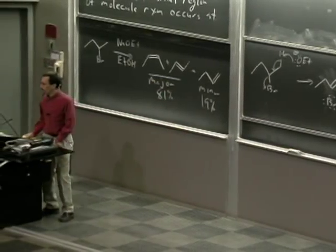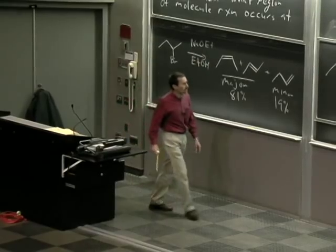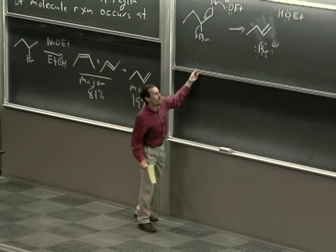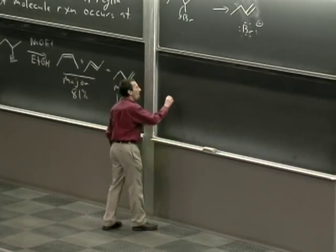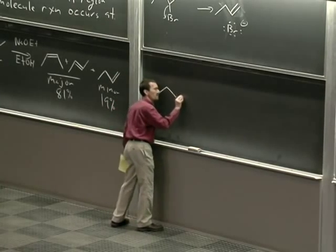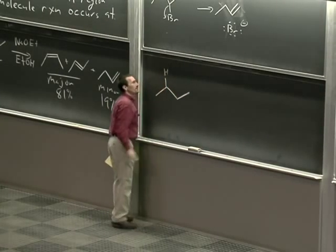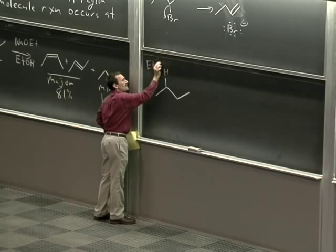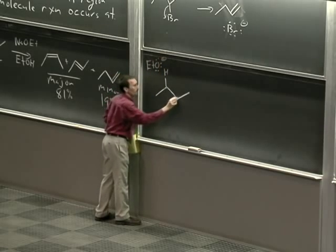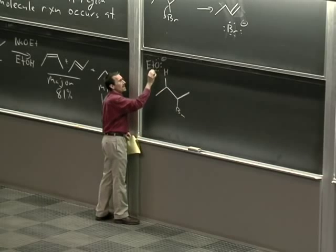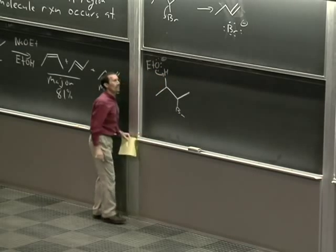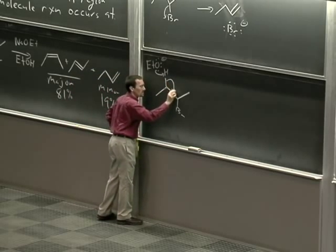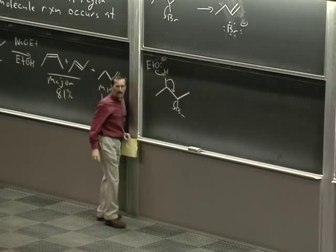There are two different places that ethoxide can pull a hydrogen off. We can pull it off from the 1 position, but we can also pull a proton off from the 3 position. Here's one of the hydrogens at the 3 position, here's our ethoxide. Electrons flow from the ethoxide to the proton, we push electrons between the two carbons, and we kick out bromide.